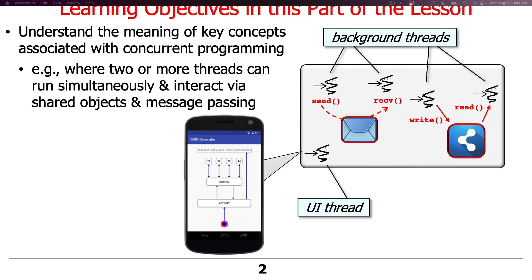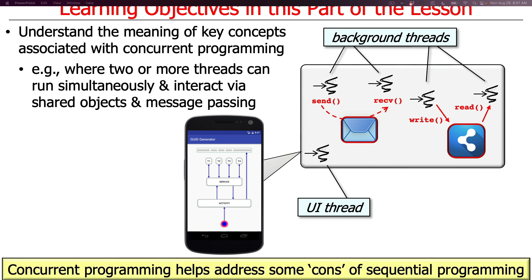Concurrent programming focuses on the situation where there are multiple threads — at least two, maybe more — and how they can run simultaneously and interact with each other using some combination of either shared objects, which are also known as synchronizers, and/or message passing.